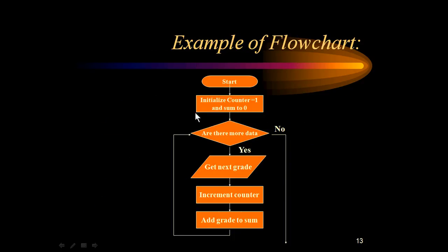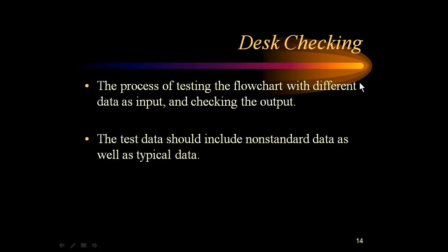Here is an example flowchart. Initialization is done through a rectangle: counter equals one, sum equals zero. Then we check: are there more data? If no, we go to the end; if yes, we get the next grade, increment the counter, add the grade to the sum, then loop back. This gives a visual picture so you know exactly how to code — where to use initialization, conditions, and loop breaks.